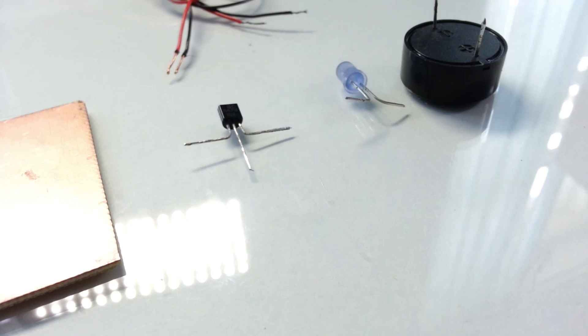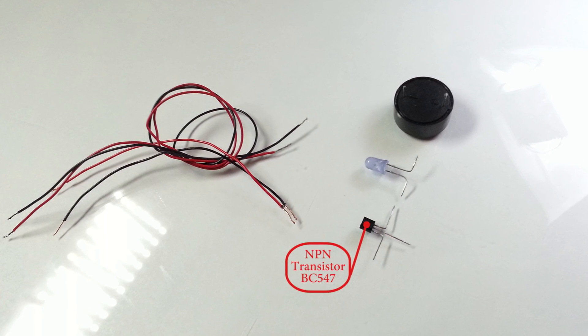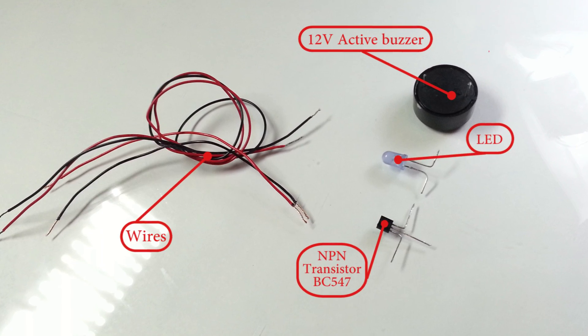For building such device we'll need an NPN bipolar transistor BC547, an active buzzer, an LED, and wires.